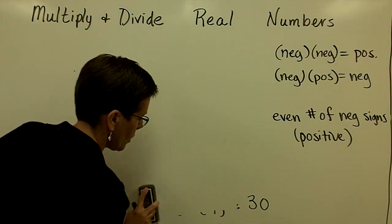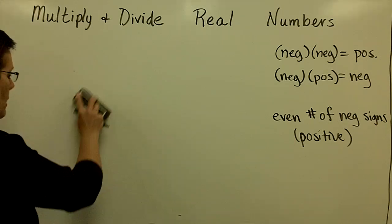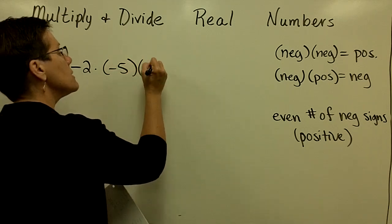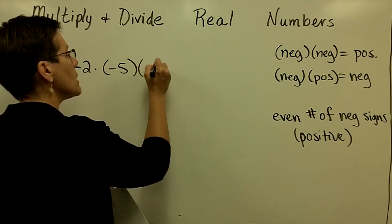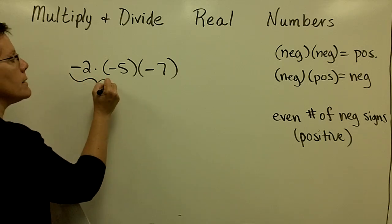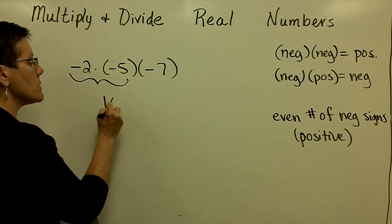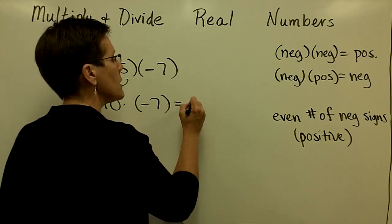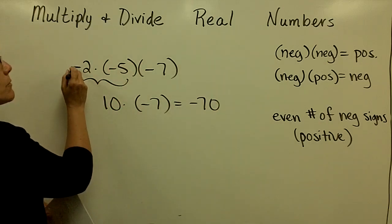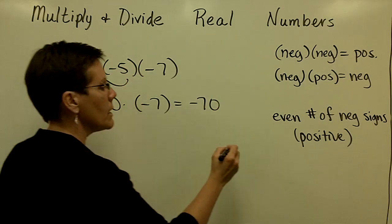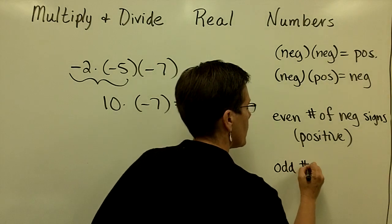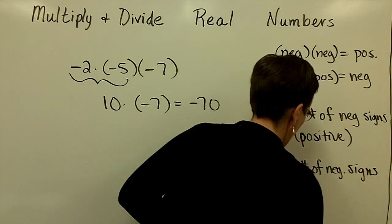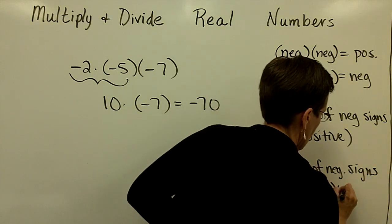In contrast, notice that if you have an odd number of negative signs — for example, negative 2 times negative 5 times negative 7 — working left to right: negative times negative is positive 10, then positive 10 times negative 7 is negative 70. With 3 negative signs, an odd number of negative signs, you get a negative answer.